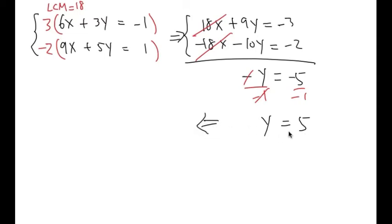We have y equals positive 5, and then we plug it back into one of these equations. It doesn't matter which one you pick. Let me work with equation number one: 6x plus 3y equals negative 1.